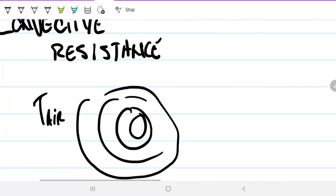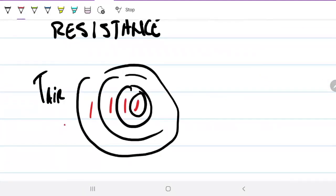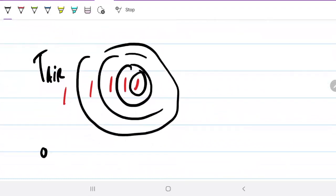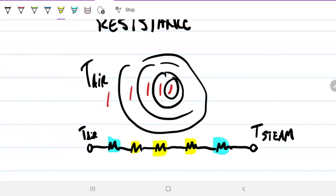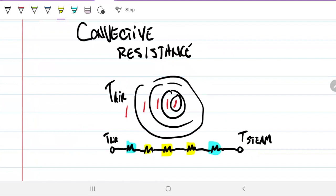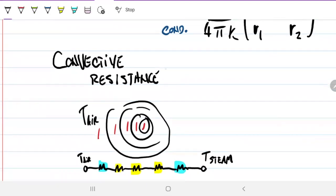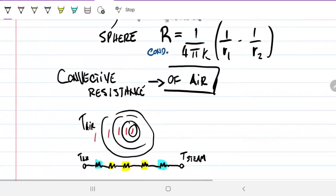If you were to go back into this problem in which we had steam, steel, insulation, insulation, air - if we're taking into account every single resistance, we would have a system that would be T air over here, then a resistance due to convection of air, a resistance due to the first insulator, a resistance due to the second insulator, a resistance due to the steel, a resistance due to the convection of the steam, and then finally T-steam. So we'd have two convective resistances and three conductive resistances. Those are the two things that are different in this question.